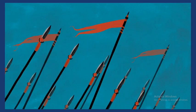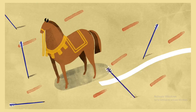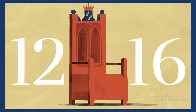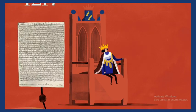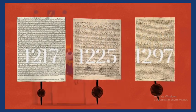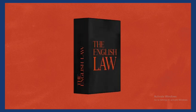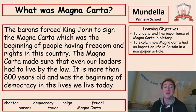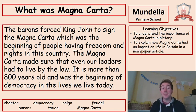Although Magna Carta was intended to create peace between King John and his rebellious barons, England was plunged into civil war after the Pope declared the charter invalid. When King John died of dysentery in 1216, nine-year-old Henry III took to the throne. To keep the peace, Magna Carta was reissued several times during the 13th century until it was finally made part of English law. The barons forced King John to sign the Magna Carta, which was the beginning of people having freedom and rights in this country, and it's the beginning of the democracy we have in our lives today.